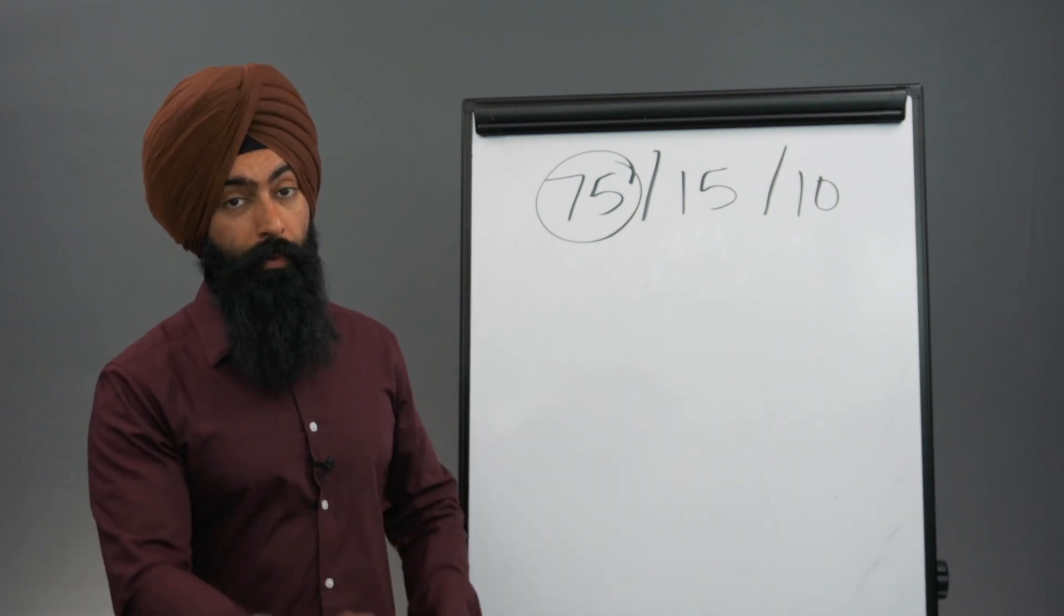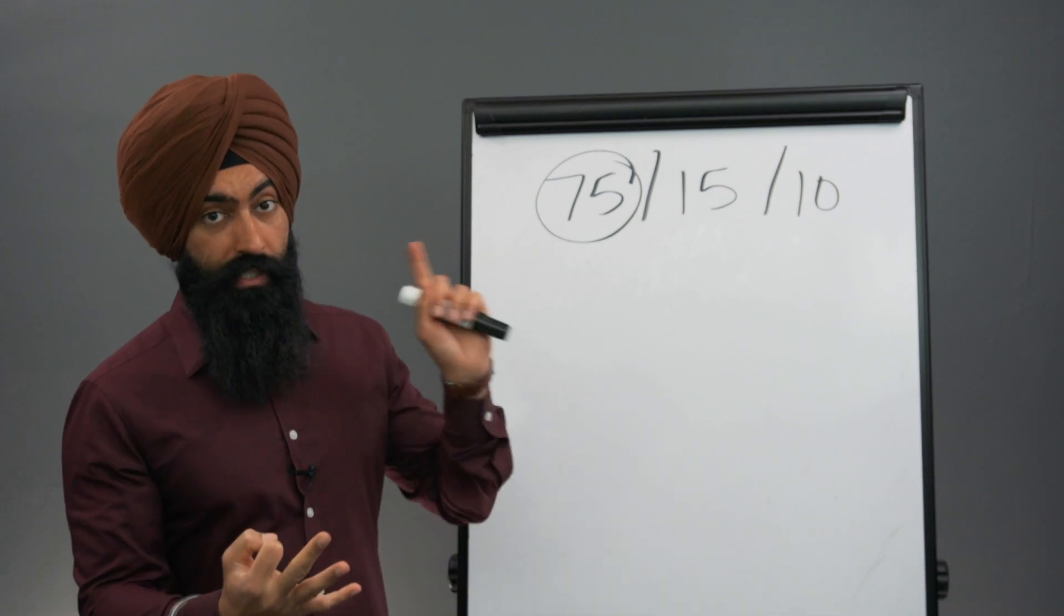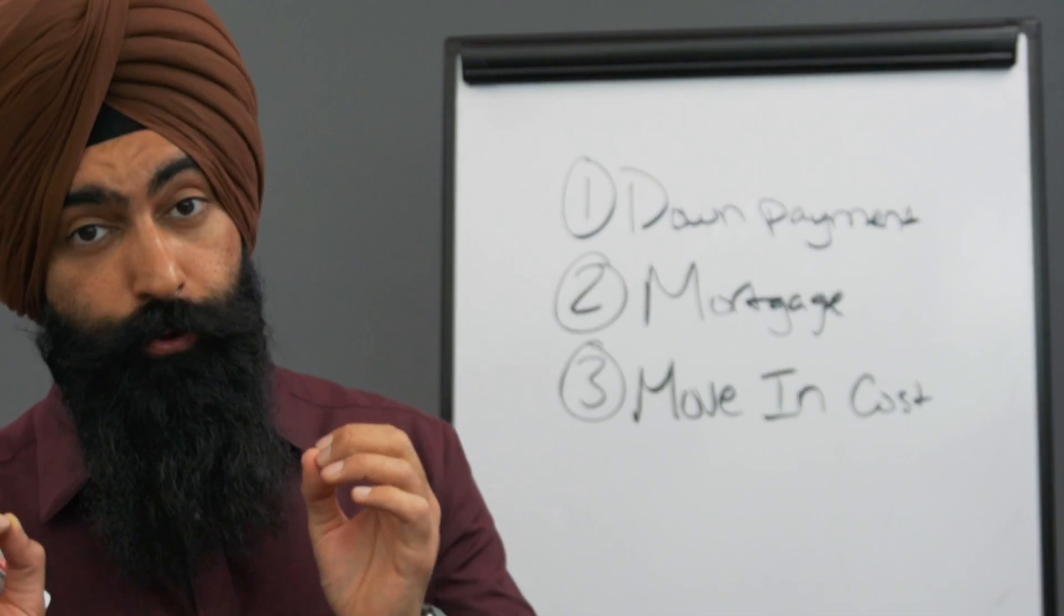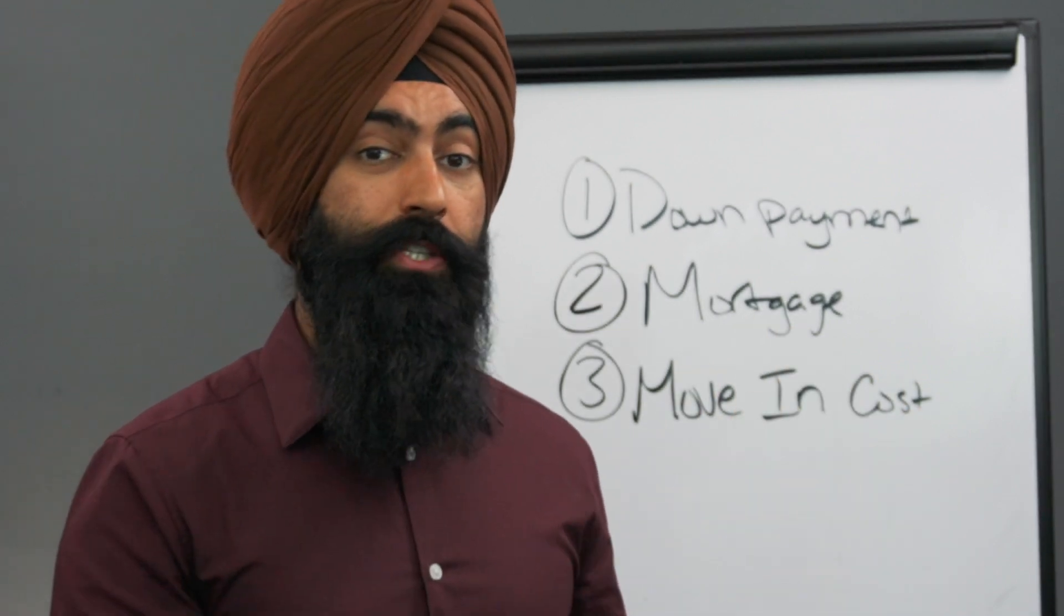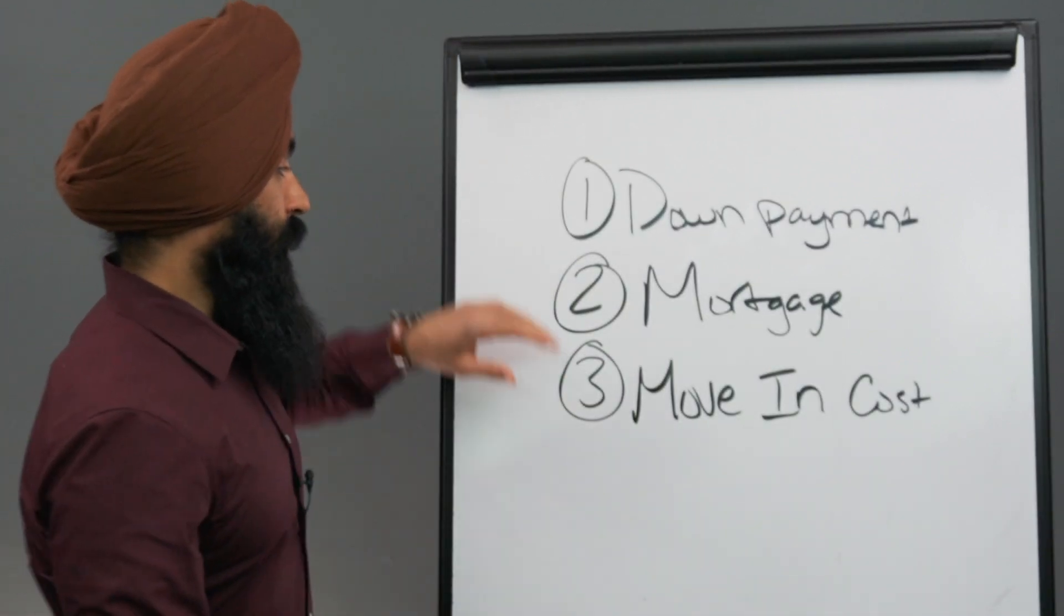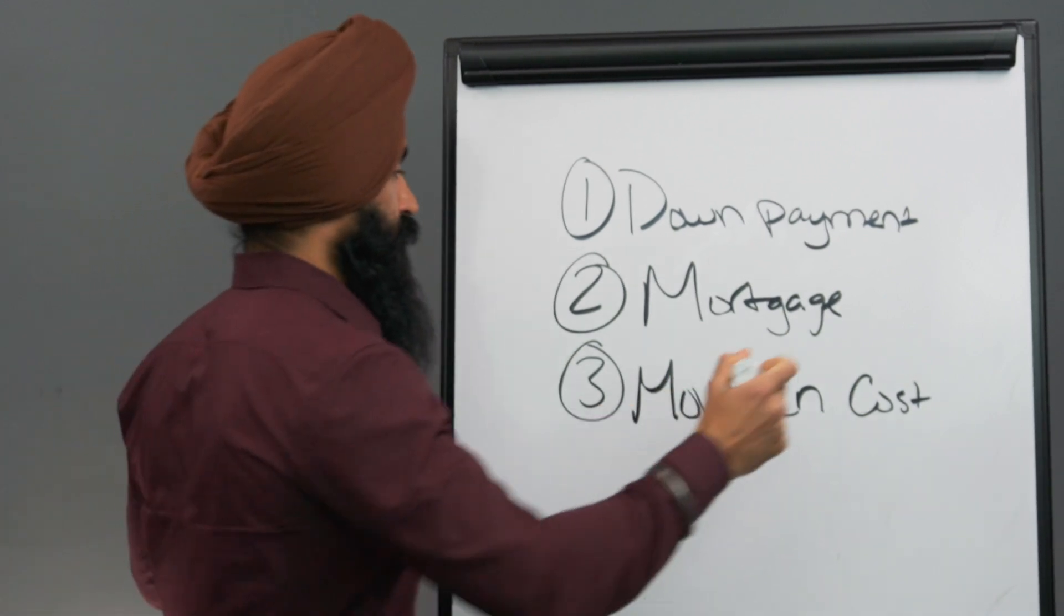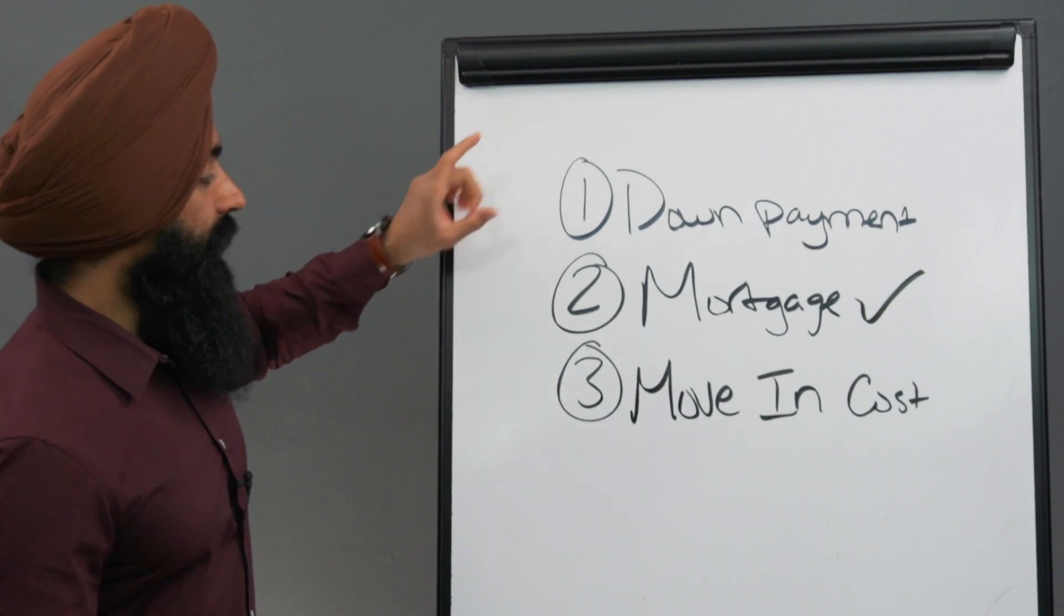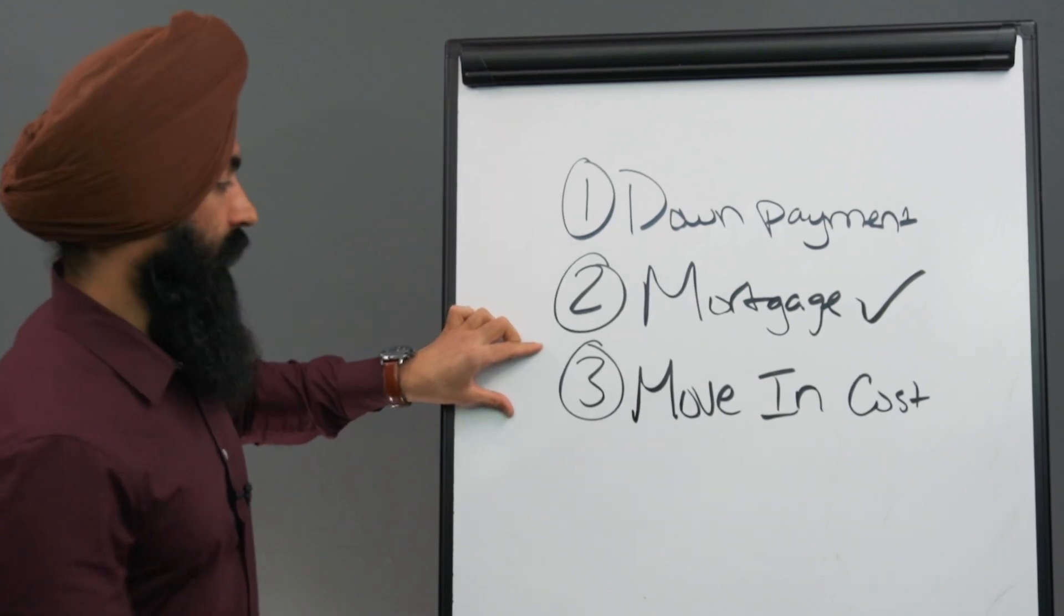So now when you go to buy a home, there's three things I want you to pay attention to. We just talked about the mortgage payment, but there's two other things I want you to remember as well. If you really want to be able to afford the home that you live in, there are three different things that you have to be able to afford. We talked about being able to afford the mortgage, so I'm not going to go over this again. But you also have to be able to afford the down payment, and you have to be able to afford the move-in costs.